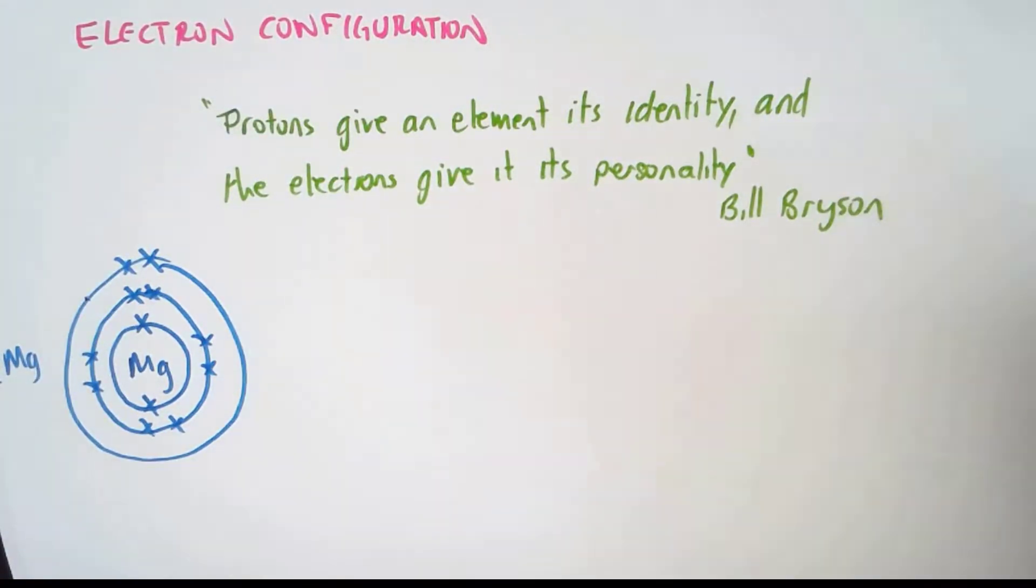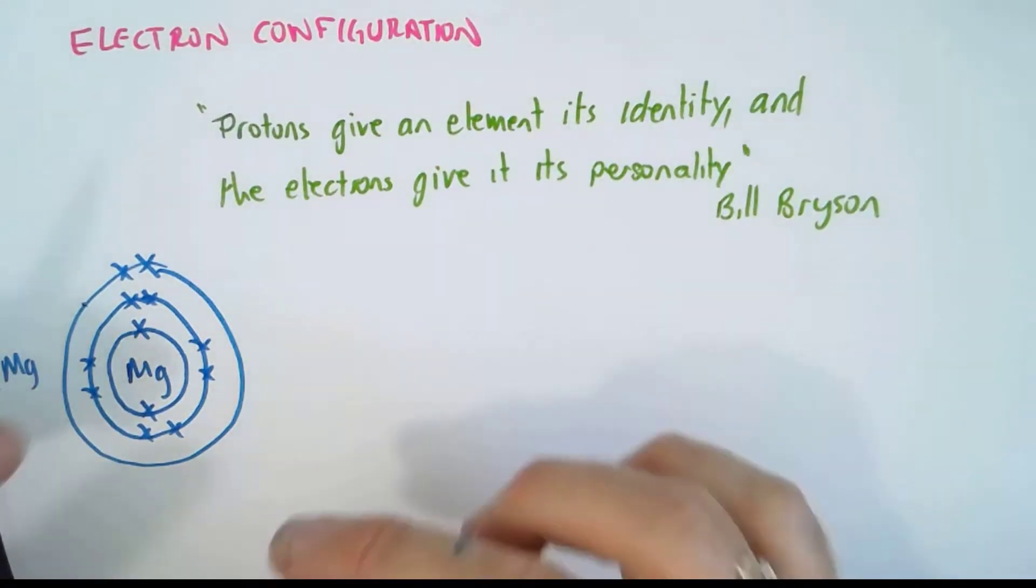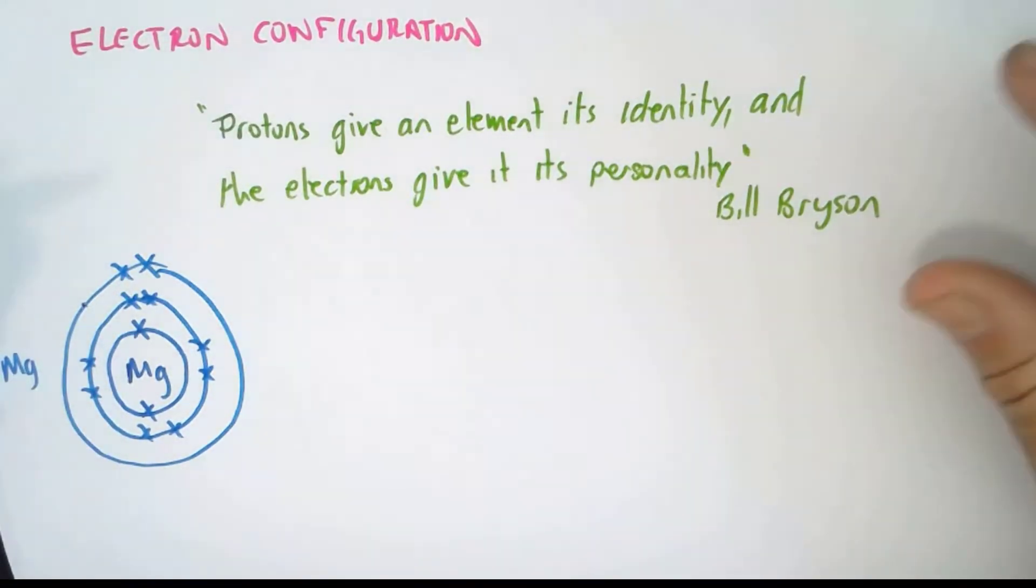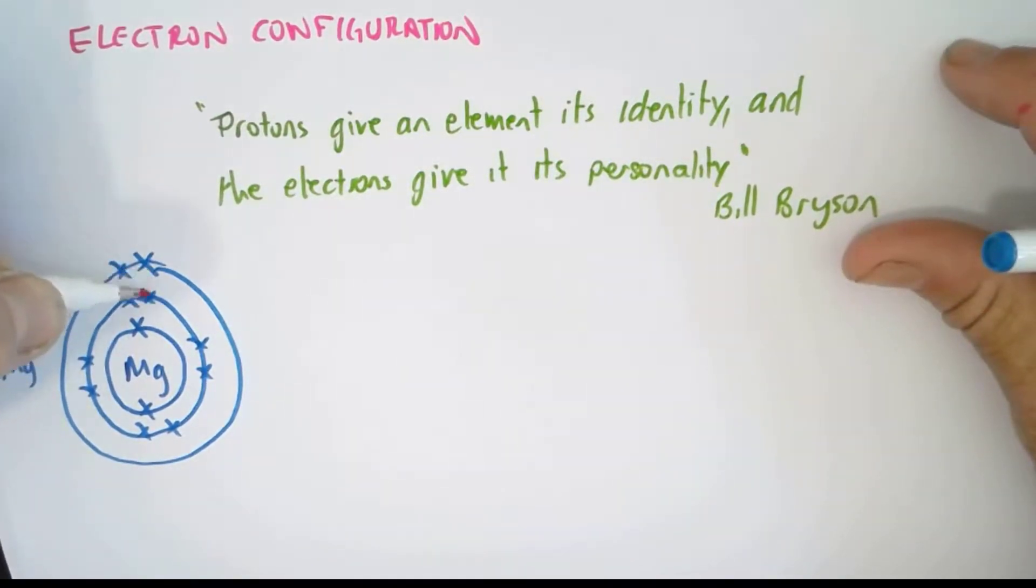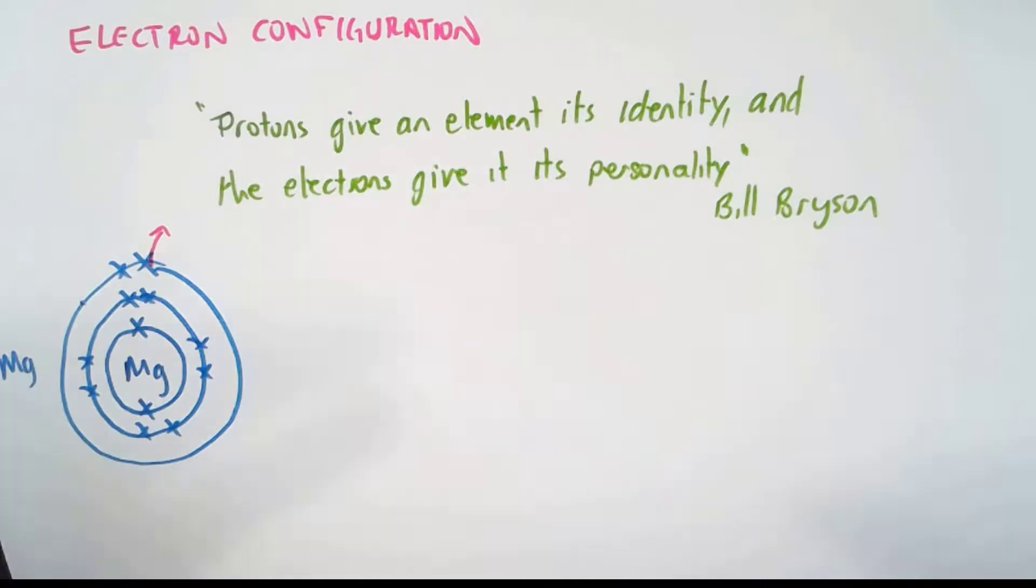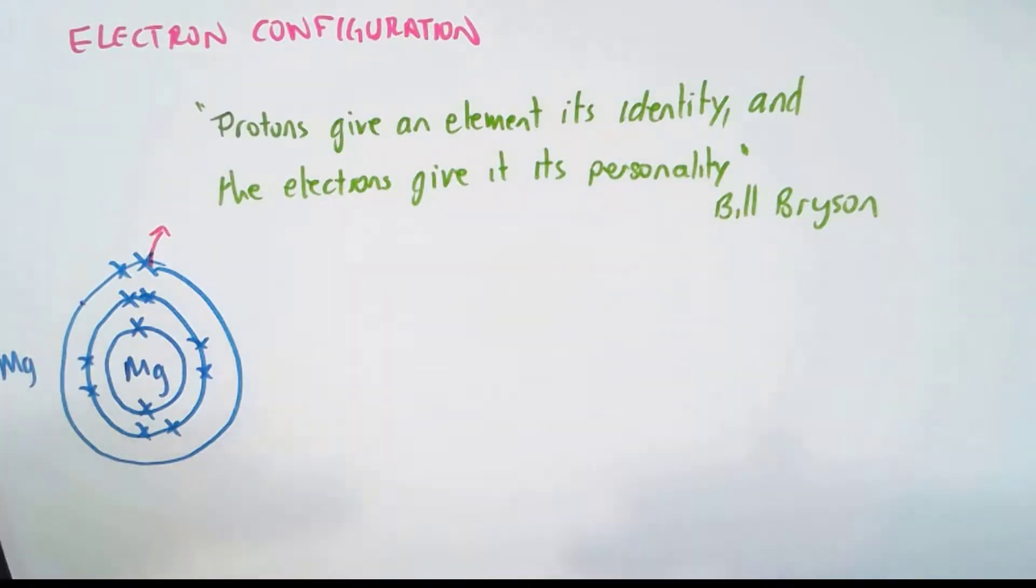So what happens when an atom is heated up is that it excites the electrons, and these electrons can, for a short period of time, jump up into a higher electron shell, because they've got a high amount of energy, they've absorbed energy from the heat of the flame, and they've jumped up to a high energy level.